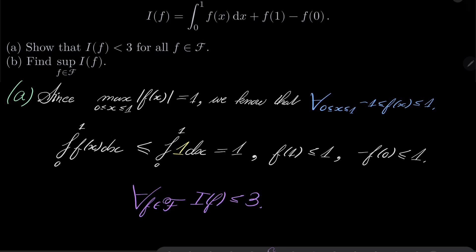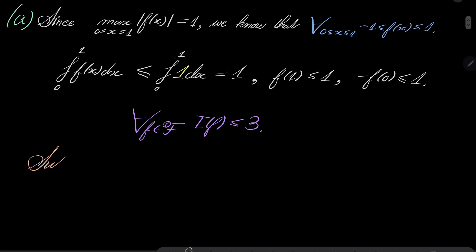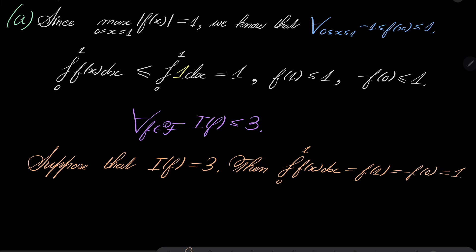Since maximum of x between 0 and 1 of the absolute value of f(x) is 1, we know that for every x between 0 and 1, f(x) is between -1 and 1. This allows us to say that the integral from 0 to 1 of f(x) dx, this integral, f(x) is bounded from above by 1, so the integral is less than or equal 1. Likewise, f(1) is less than or equal 1, and minus f(0) is less than or equal 1, which means that I(f) is less than or equal 3.